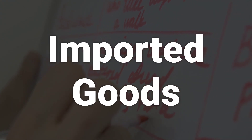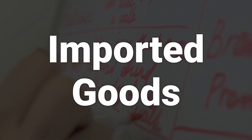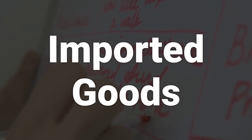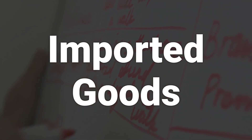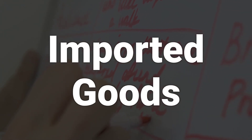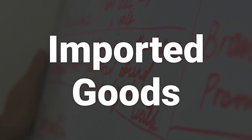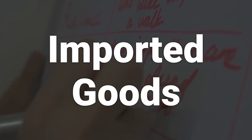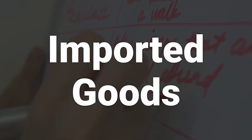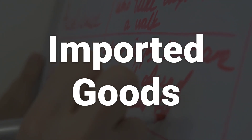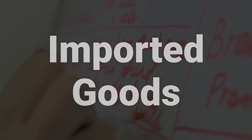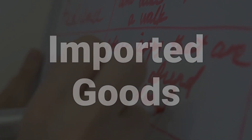Imported goods are sometimes referred to as a source of leakage because they can have the effect of transferring income that was earned in one country to another country. The funds used to purchase the imports leave the immediate area, resulting in an outflow from the domestic area. When the term leakage is used in the retail sector, it usually refers to consumers who spend money outside their local market. This presents a challenge for businesses within this kind of economy, as they must search for other sources of revenue.